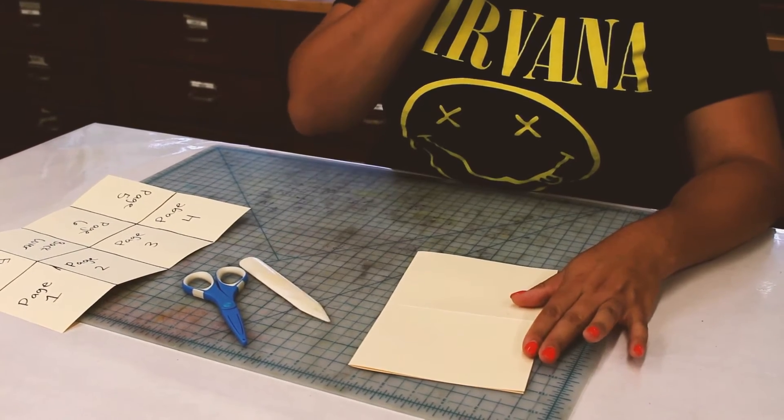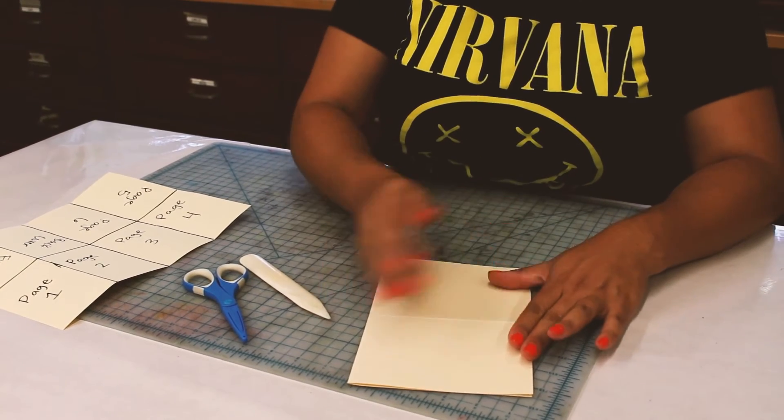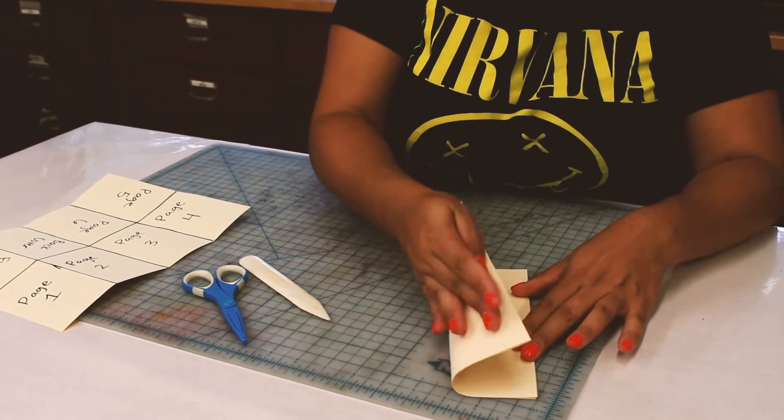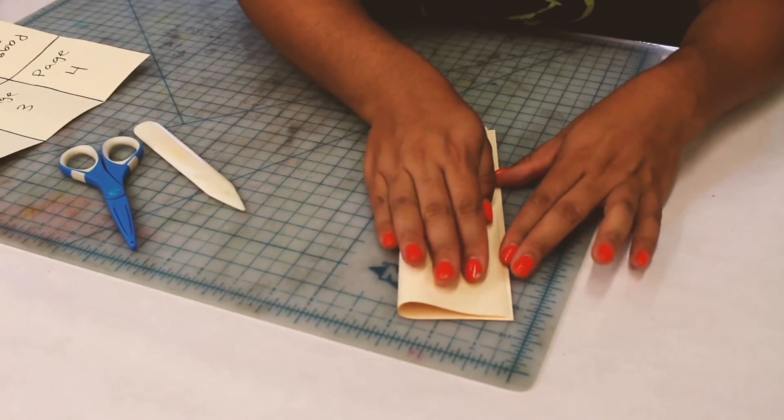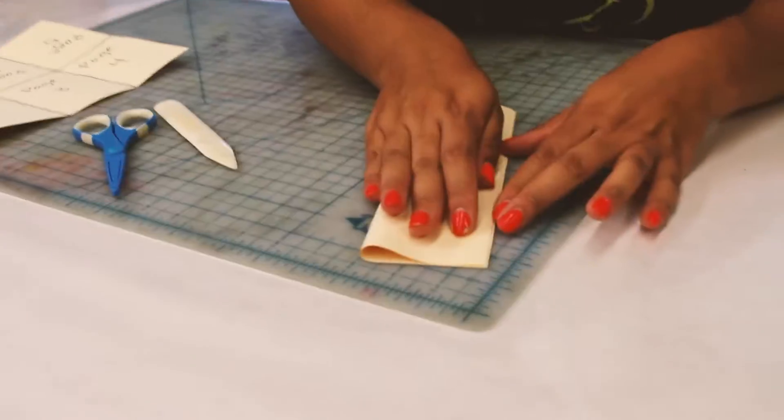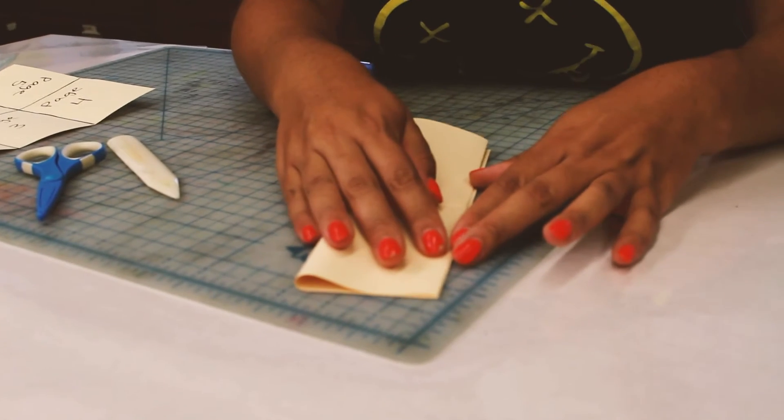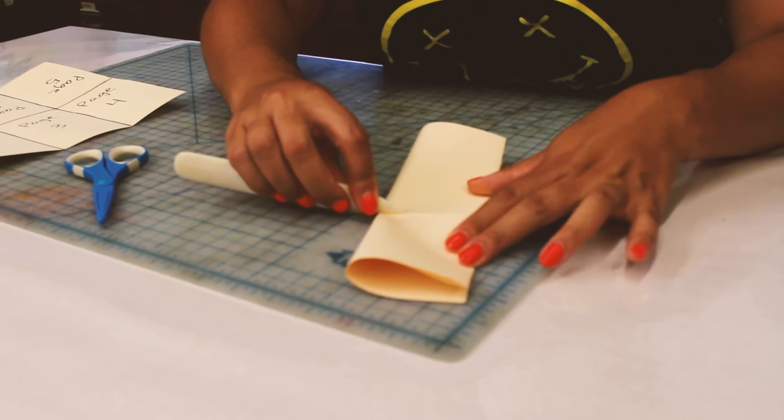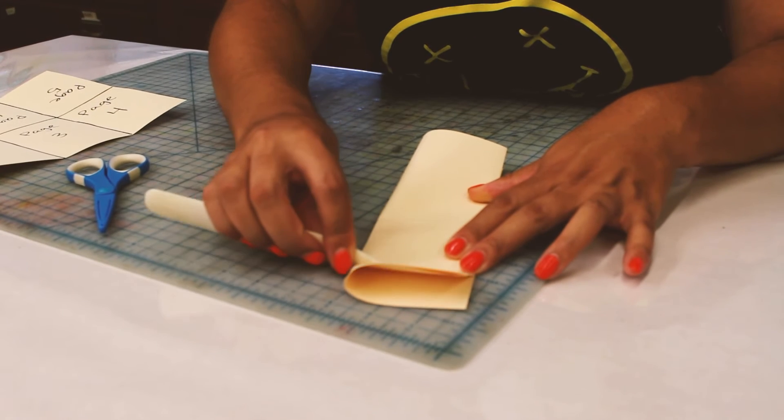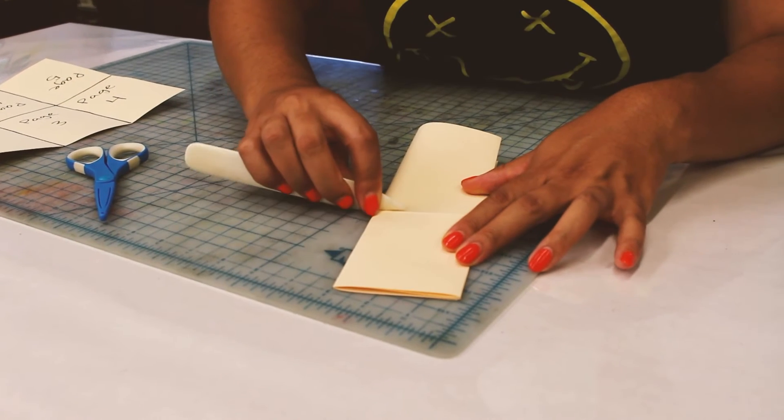After that you're gonna fold this widthwise or hamburger wise one more time so that you have your pages, and this time try to line it up with that top line. Great, you'll put a line down the middle again and then go up and down just making sure that that crease is really crisp.